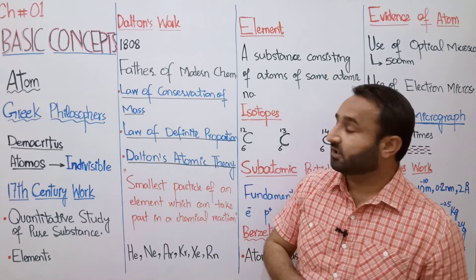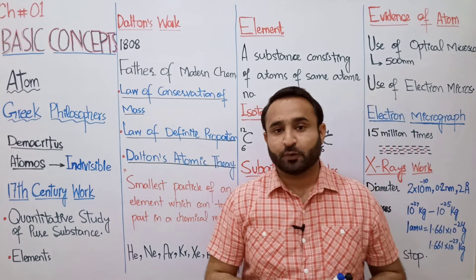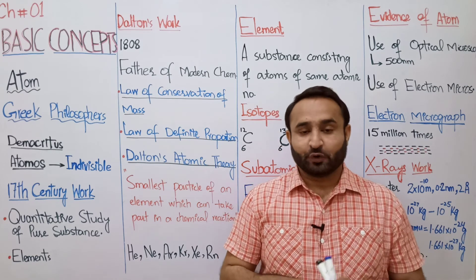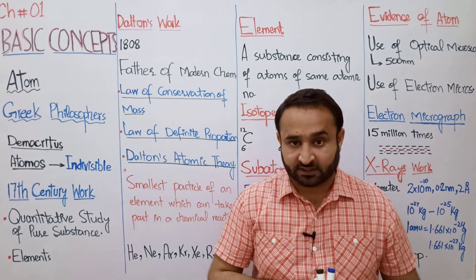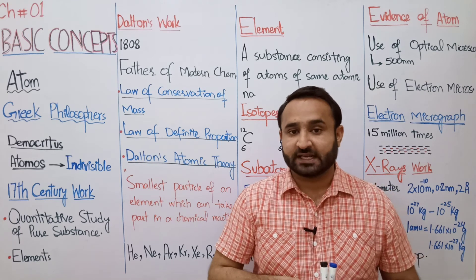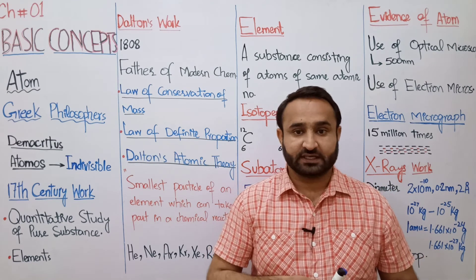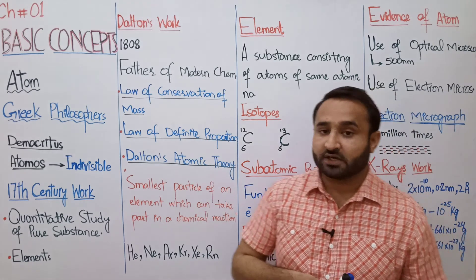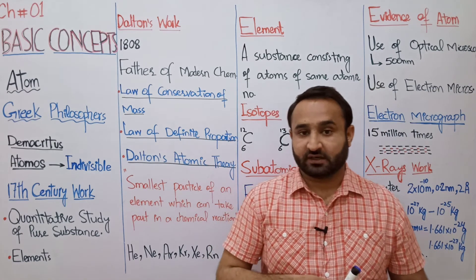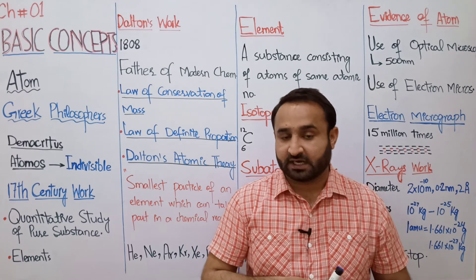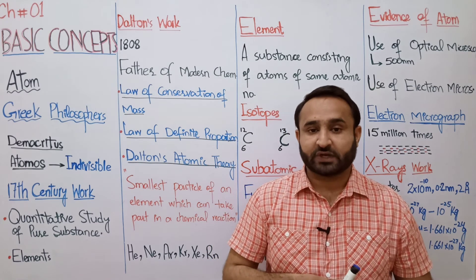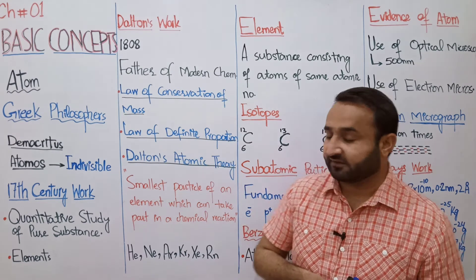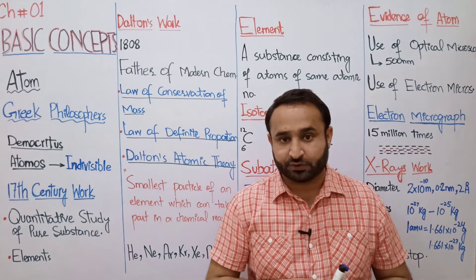ہم دیکھتے ہیں Dalton's work۔ Dalton کو father of modern chemistry کہا جاتا ہے، جبکہ overall father of chemistry جابر بن حیان کو کہا جاتا ہے۔ John Dalton ایک انگلش سکول ٹیچر تھے اور 1808 میں انہوں نے Dalton's atomic theory دی۔ Chemistry میں ان کی contributions میں تین laws شامل ہیں: law of conservation of mass، law of definite proportion، اور Dalton's law of partial pressure۔